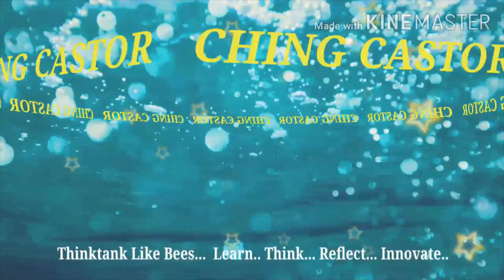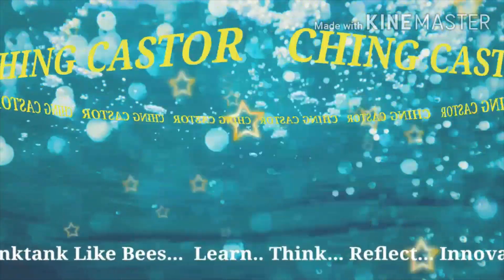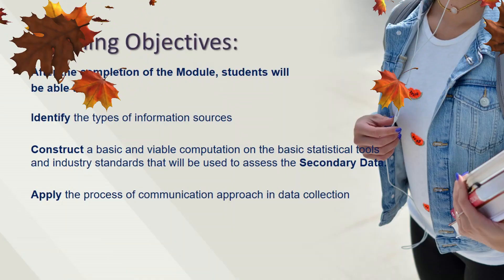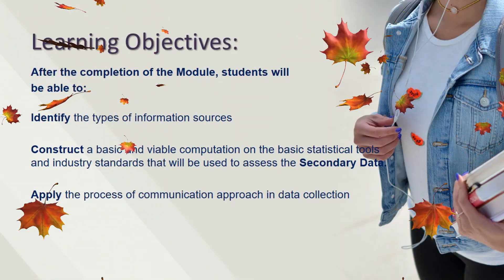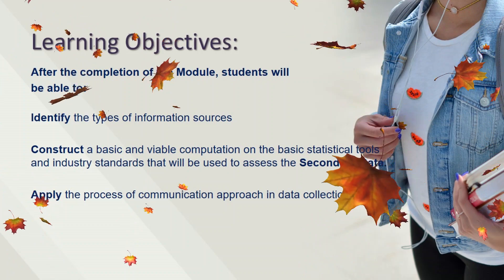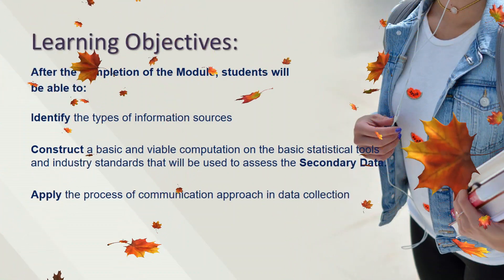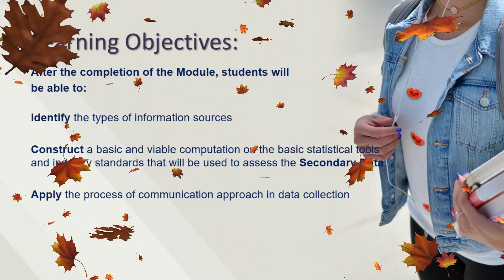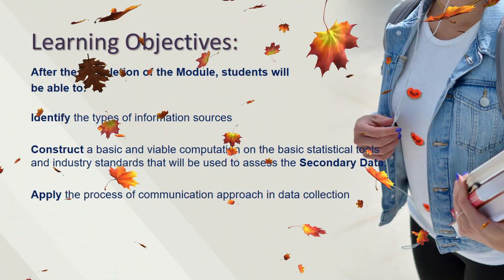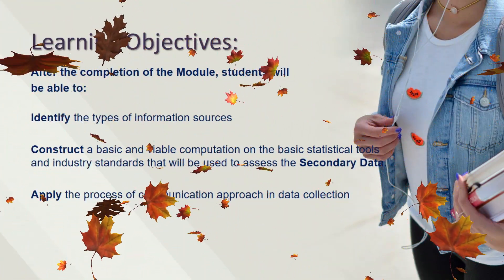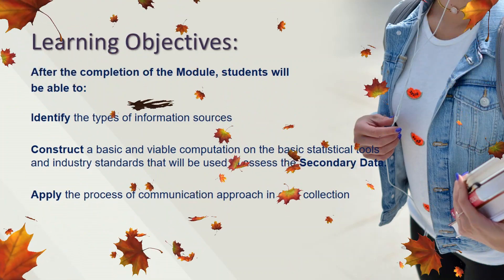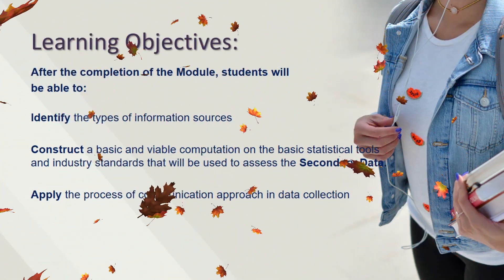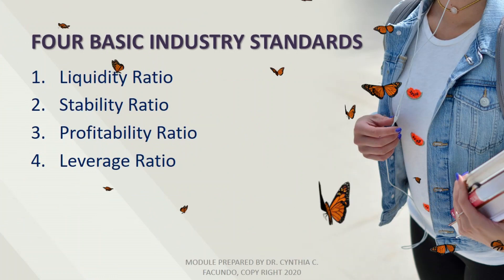Good morning, guys! We are now starting to discuss Module 6 of Basic Industry Standard. After the completion of the module, students will be able to: first, identify the types of information sources; second, construct a basic and viable computation on the Basic Industry Standard that will be used to assess the secondary data; and third, apply the process of communication approach in data collection.